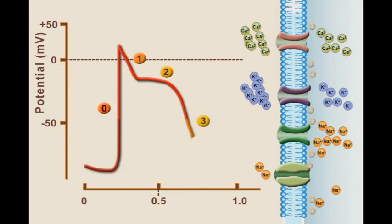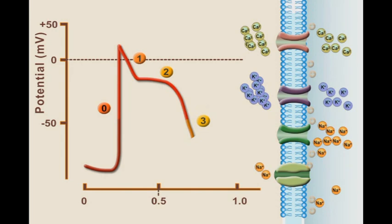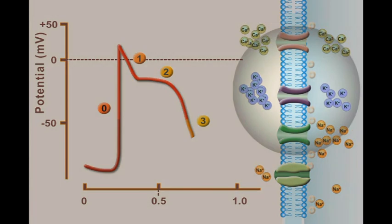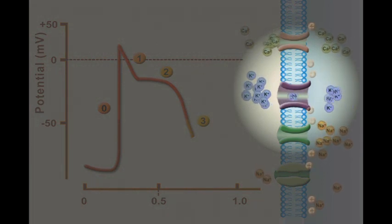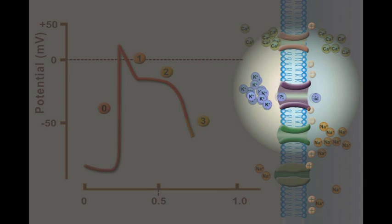In phase three, there is rapid repolarization of the cardiac cells. The calcium channels are suddenly closed, which leaves the potassium efflux current unopposed.